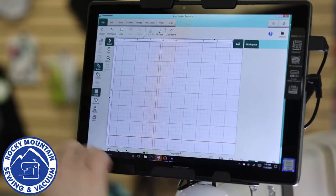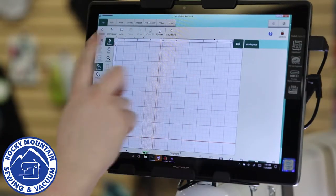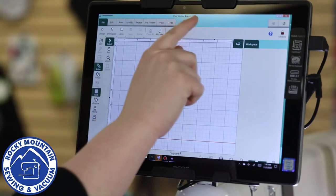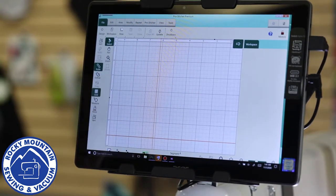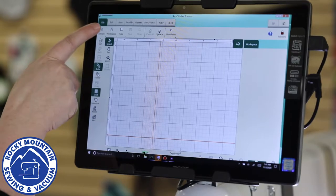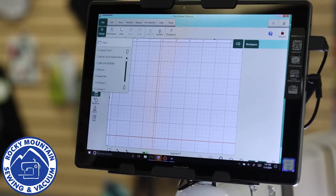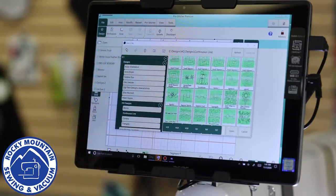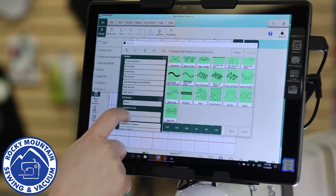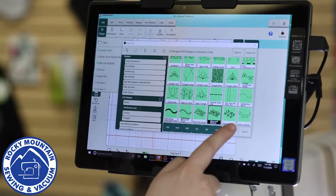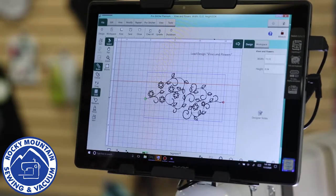Right here we have the ProStitcher screen, and on the ProStitcher screen it gives me a bunch of different tabs and options and buttons that I can play with and really make the design my own. First off, we're going to go to a design. In here there are tons of different designs to choose from, not to mention a ton of different categories. For now, I'm just going to pick something like that and open, and there's my design.